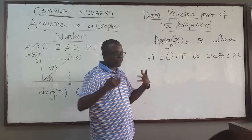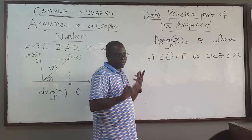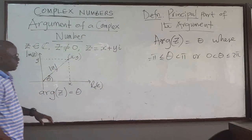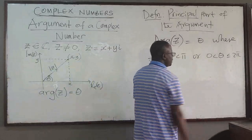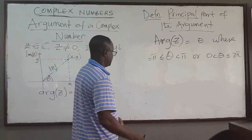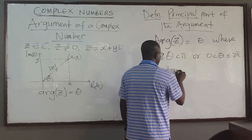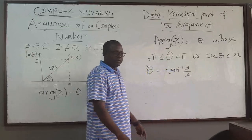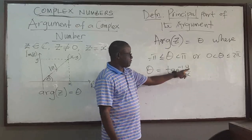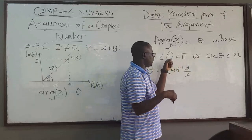Some textbooks, when they tell you to find the argument of the complex number, are often referring to the principal part by default. So the argument of the complex number is the principal part when restricted to this interval. The general argument equals the principal argument plus 2πn, where n is an integer. That is the relationship between the argument and the principal argument. To compute the argument, you use theta equals arctan(y/x), but you have to be careful — like in polar coordinates — about the quadrant. If you're in the first quadrant it's fine, but otherwise you have to be careful depending on the quadrant.